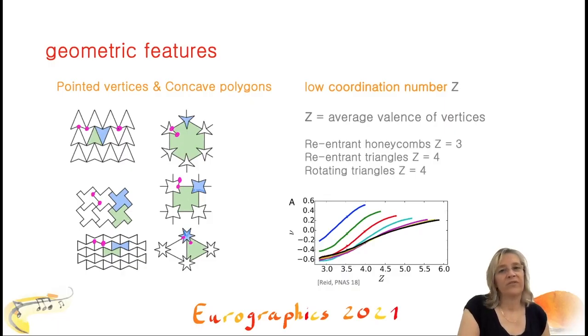There are three main geometric features present in the regular auxetic structures, which we see on the left. First, there is the low coordination number Z, which is the average degree of the vertices in the network. Second, there are pointed vertices right here, which are vertices having an angle greater than 180 degrees between two neighboring edges. Finally, we have concave polygons, which is a direct implication of the occurrence of pointed vertices. Our goal will be to remove edges in a chord in order to reproduce these geometric features.